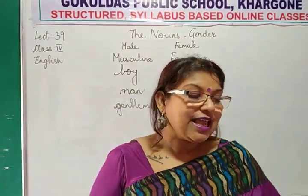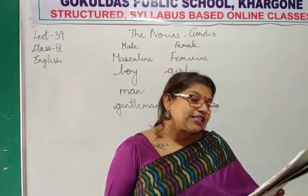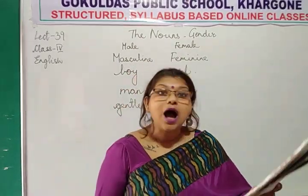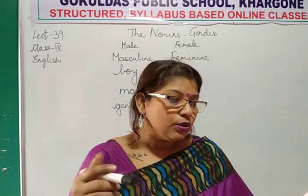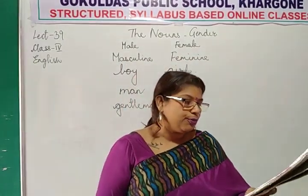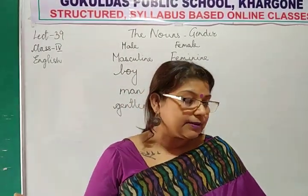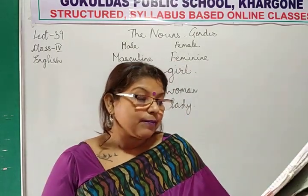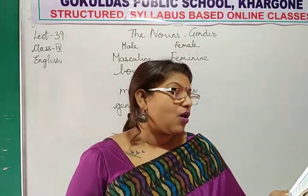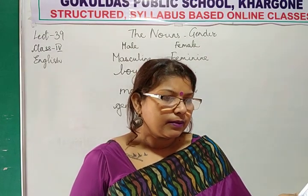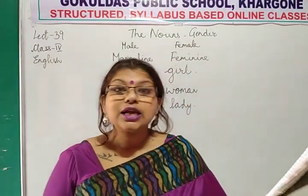A noun that is the name of any male person or animal is said to be of the masculine gender — as a boy, man, uncle, bull. All these are masculine. Even animals have gender. A noun that is the name of any female person or animal is said to be of the feminine gender — as a girl, woman, aunt, cow.